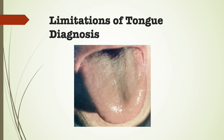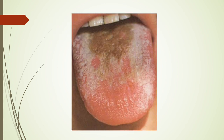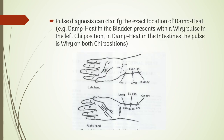The tongue does not always reflect all aspects of a condition. For example, in liver blood deficiency with liver qi stagnation, the tongue will often reflect liver blood deficiency but not liver qi stagnation. Do not expect the tongue to reflect all aspects of a pathology. There is also a lack of detail — a thick sticky yellow coating on the root shows damp heat in the lower burner but not its exact location. Pulse diagnosis can clarify the exact location, for example, damp heat in the bladder presents with a wiry pulse in the left qi position, while in damp heat in the intestines, the pulse is wiry on both qi positions.